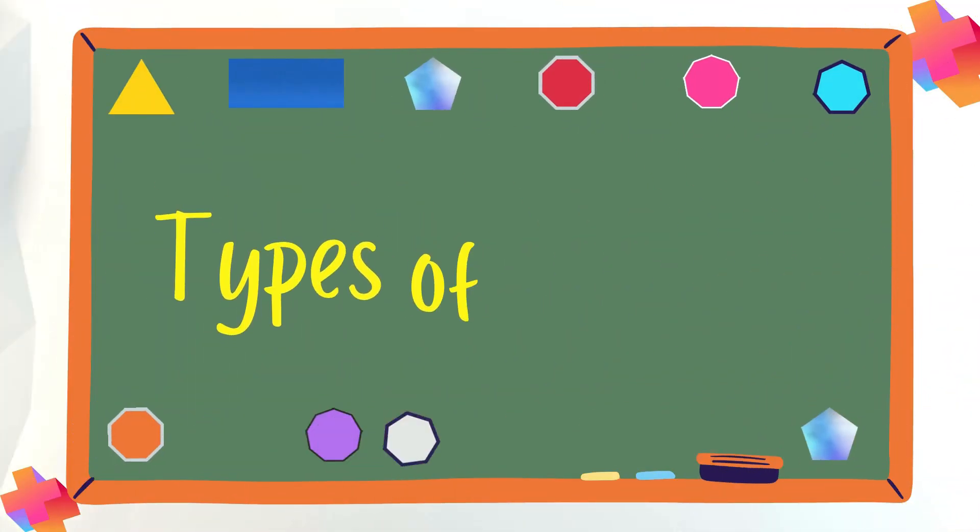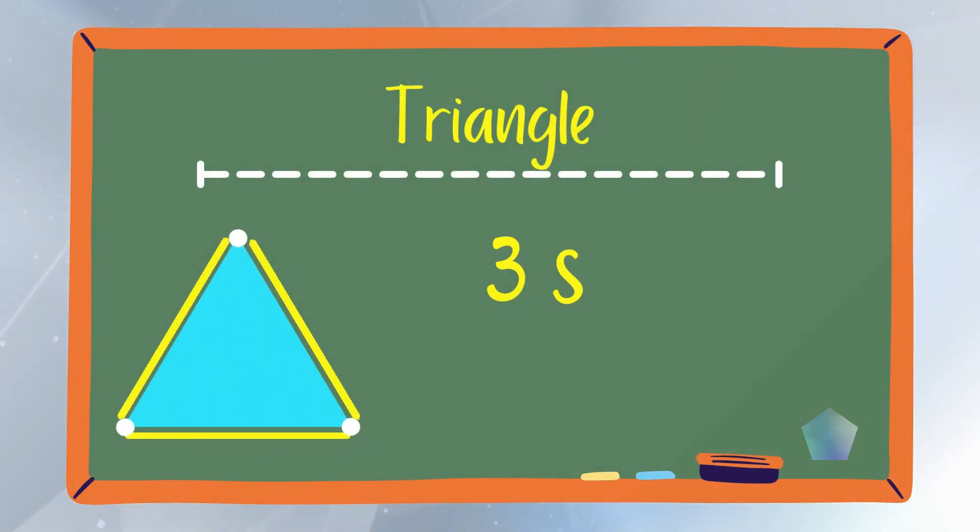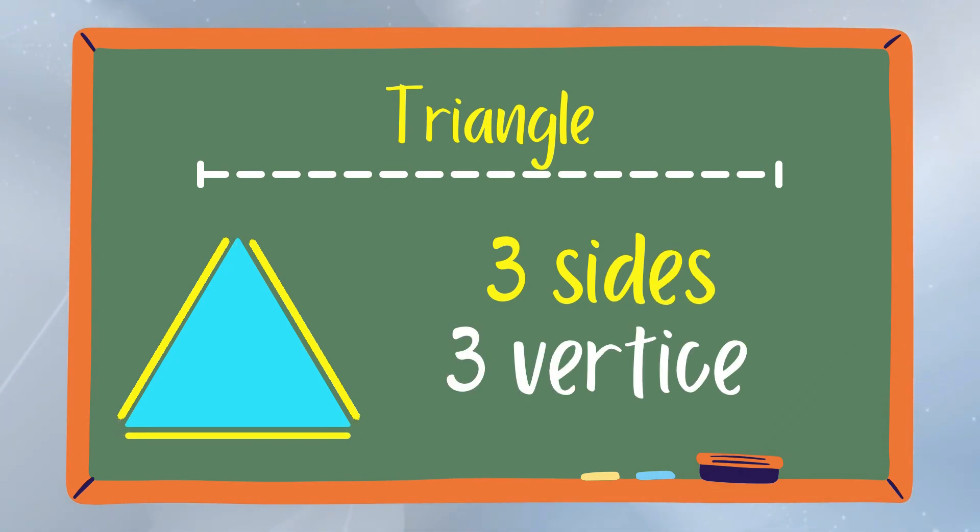Now, let us discuss the types of polygons. Triangle is a polygon that has three sides and three vertices.